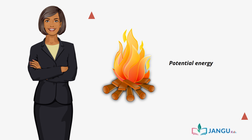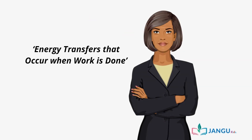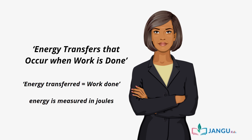Also, the chemical energy in petrol is being converted to heat in the engine, which makes the car move. The potential energy in wood is being converted into heat or light energy when we burn it. Energy is the ability to do work, therefore energy transferred from a source is equal to the amount of work done. Like work, energy is measured in joules.